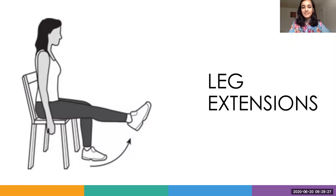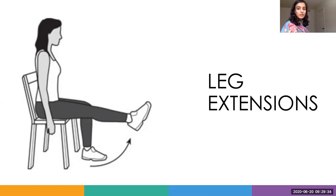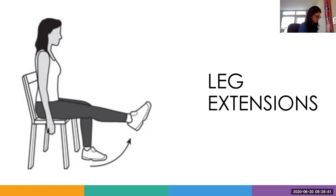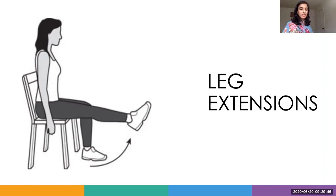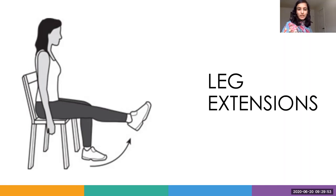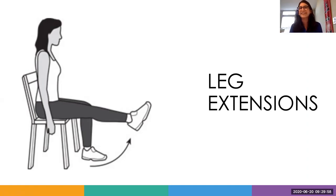Let's do some exercises while sitting at your desk. The first is leg extension. All you do is slowly kick your leg back and forth. To add resistance, you can use therabands or put on ankle weights, alternating legs right and left. Everyone keep it up — we know you're doing it even though we can't see your legs!